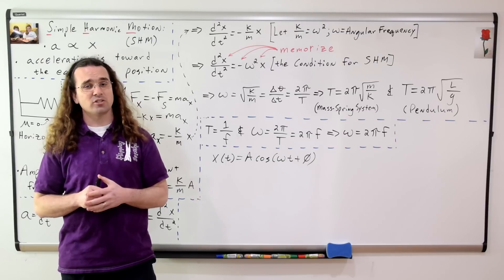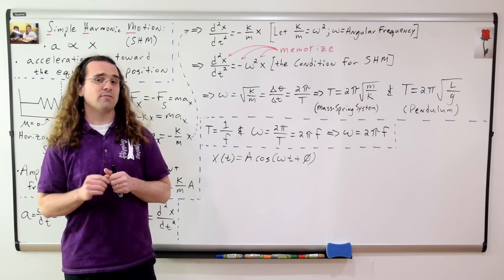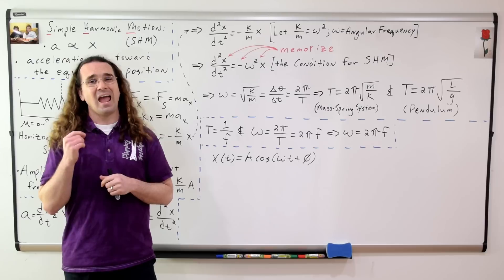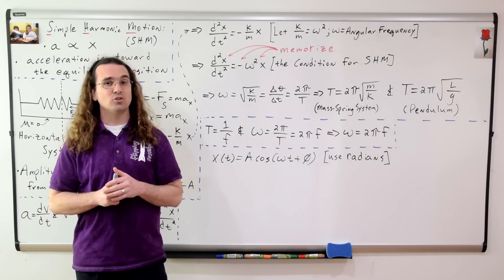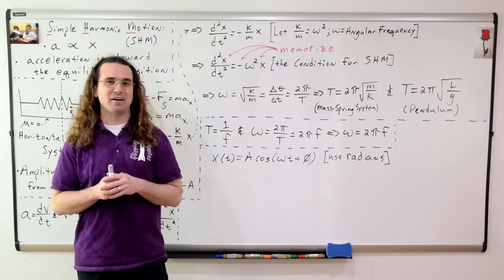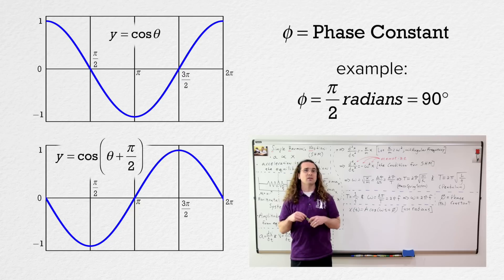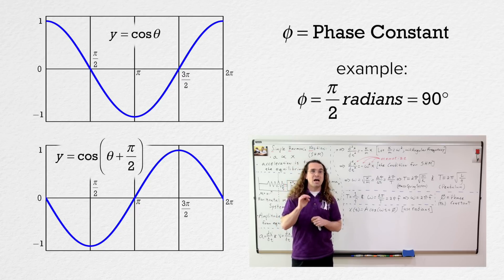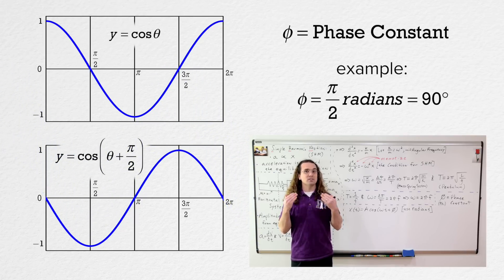An equation for position as a function of time, which appears on your AP equation sheet, which satisfies the condition for simple harmonic motion, is the position as a function of time equals amplitude times the cosine of the quantity angular frequency times time plus phi. Because angular frequency is in radians per second, you must use radians for phi in this equation. Phi is the phase constant or the phase shift — it shifts the location of the cosine or sine wave on the horizontal axis.